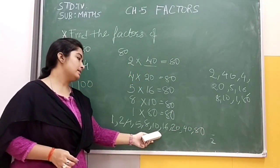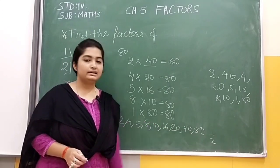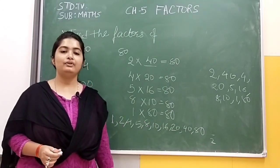How many factors? Counting 1, 2, 3, 4, 5, 6, 7, 8, 9, and 10. There are 10 factors of 80.